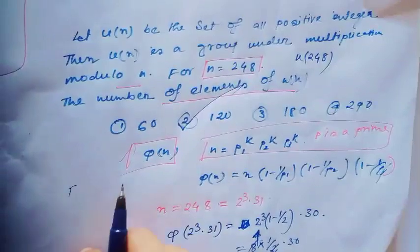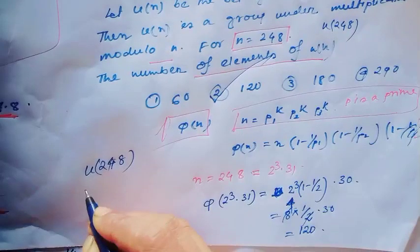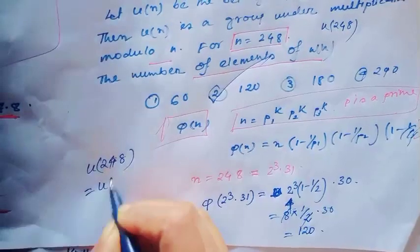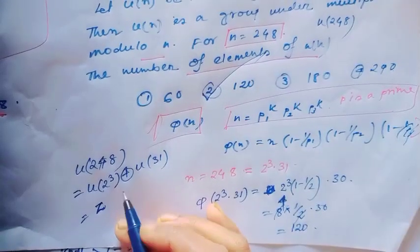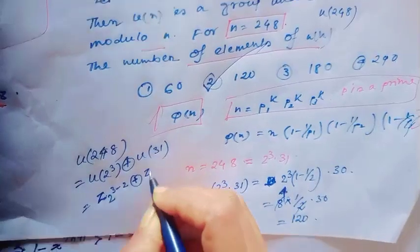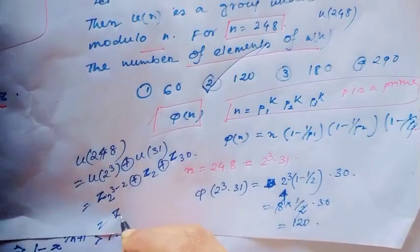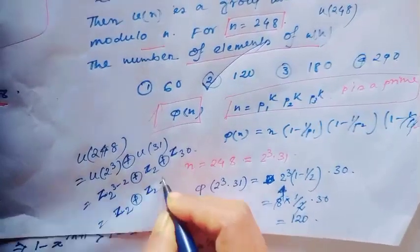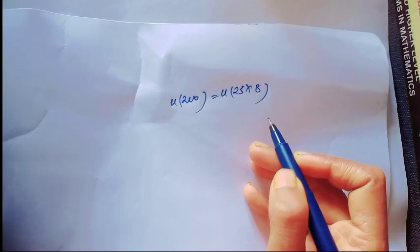Now the question: the group U(248) is isomorphic to which group? We can write U(248) as U(2³) direct product U(31). U(2³) is isomorphic to Z2 direct product Z2, and U(31) is isomorphic to Z30. Therefore U(248) is isomorphic to Z2 direct product Z2 direct product Z30.